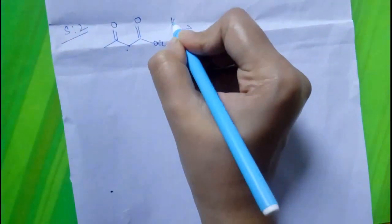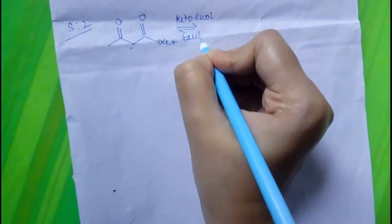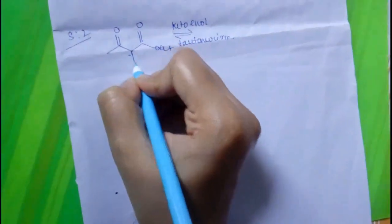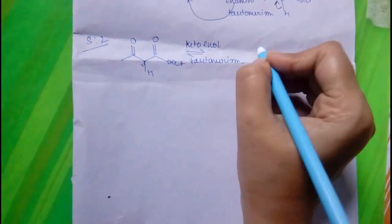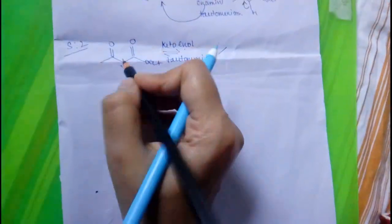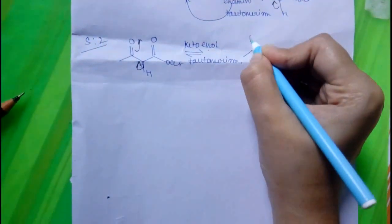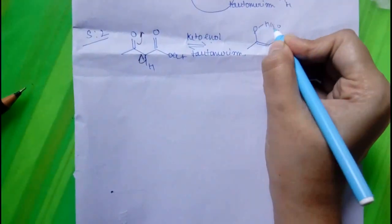Here, a keto-enol tautomerism will be observed. It is stable in its enol form due to hydrogen bonding. How? Like that. This is our hydrogen bond.